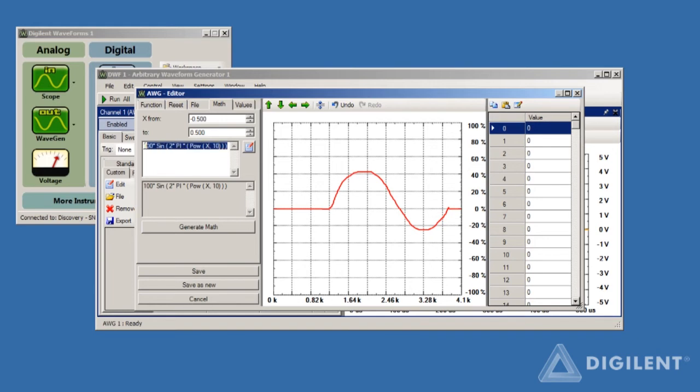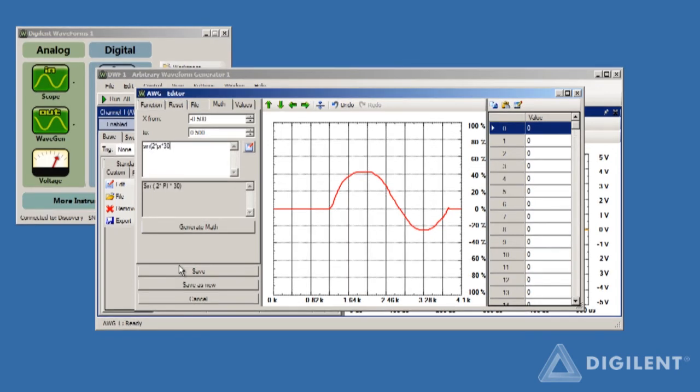Now, just type your equation in the text box. I'll form my equations from sinusoids with frequencies of 30 and 31 cycles. So, my signal will be the sine of 2 times pi times 30 times x plus the sine of 2 times pi times 31 times x.